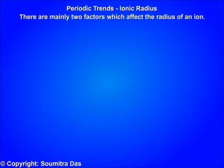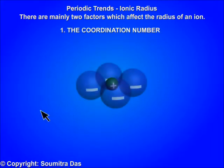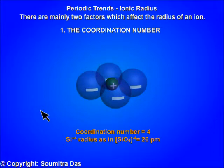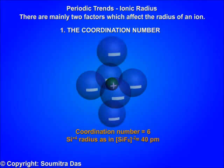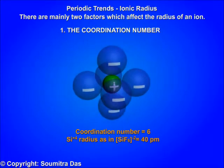There are mainly two factors which affect the radius of an ion. Number one: the coordination number. Coordination number is the number of atoms or ions the central atom of the crystal is attached to. For the same ion, the ionic radius increases with the coordination number, because the electron cloud is drawn by the presence of more surrounding ions.